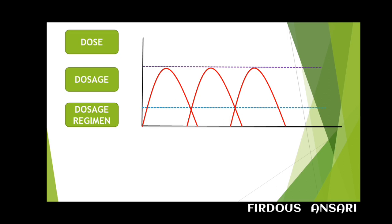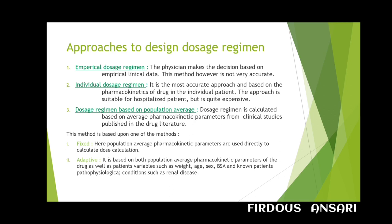Once parameters like total clearance, volume of distribution, and elimination half-life have been determined, and a relationship between drug serum concentration and pharmacological response has been established, a dosage regimen based on pharmacokinetic parameters can be developed. The main objective is to maintain an average steady-state concentration. An optimal multiple dosage regimen ensures drug plasma concentration stays within the therapeutic window for the entire duration of therapy.